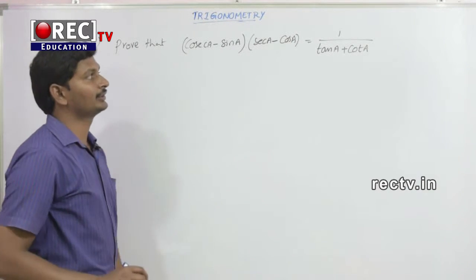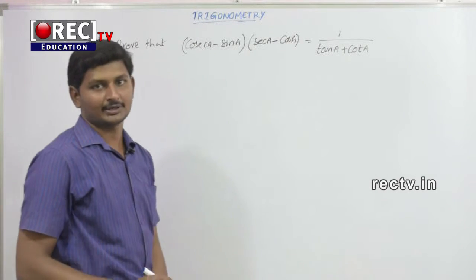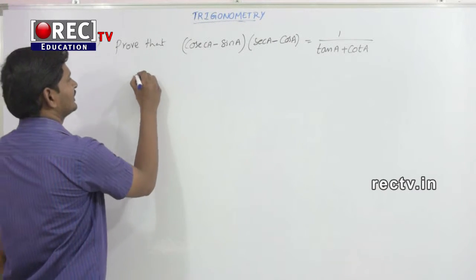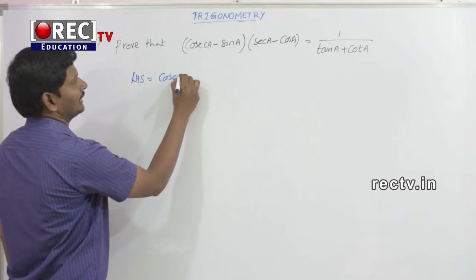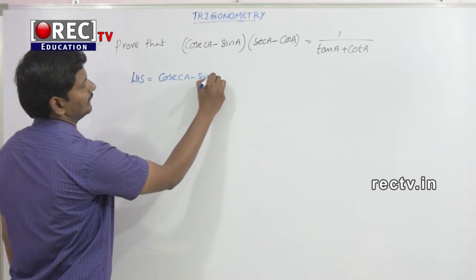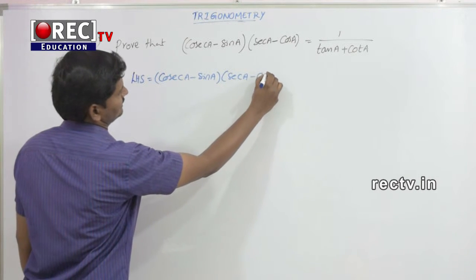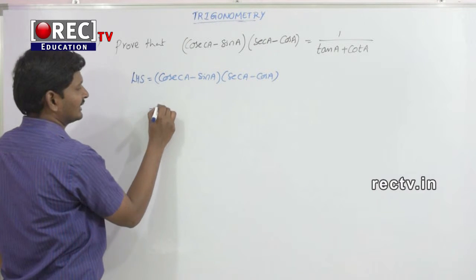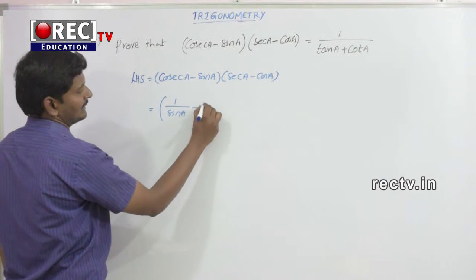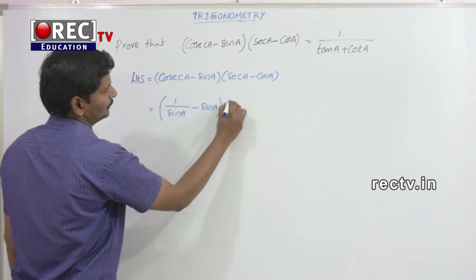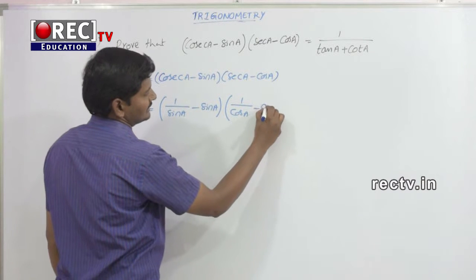We need to prove that cosecant(a) minus sin(a) into secant(a) minus cos(a) is equal to 1 divided by tan(a) plus cot(a). Consider the LHS, that is cosecant(a) minus sin(a) into secant(a) minus cos(a). Cosecant(a) is nothing but 1 by sin(a) minus sin(a), into secant(a) which is 1 by cos(a) minus cos(a).